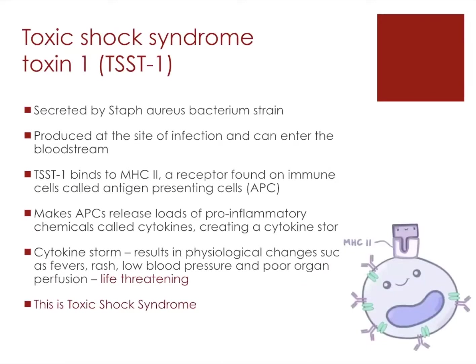TSST-1 is secreted by Staph aureus, normally produced at the site of infection, and can enter the bloodstream. It binds to the major histocompatibility complex 2 (MHC2), a receptor found on antigen presenting cells. Once it attaches, it makes the antigen presenting cell release large amounts of pro-inflammatory chemicals called cytokines, producing a cytokine storm. A cytokine storm results in physiological changes such as fevers, rash, low blood pressure, and poor end organ perfusion — this is life-threatening, and is what we mean by toxic shock syndrome.